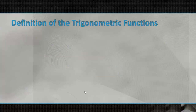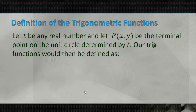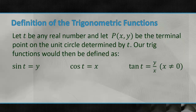Let's start with the definition of trig functions as it applies to this. Let t be any real number, and let point (x, y) be the terminal point on the unit circle determined by t. Our trig functions are defined as follows. The sine of t equals y — that's your y coordinate. Cosine of t equals x, and tangent of t equals y over x, when x doesn't equal 0.